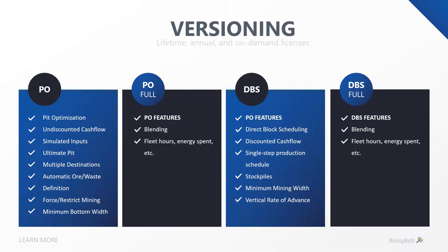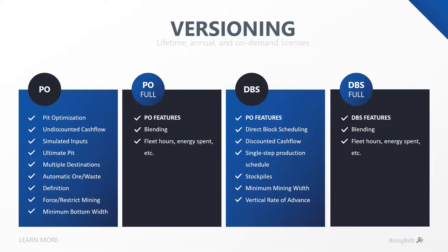SimSched DBS Core delivers an optimized mine schedule straight from the block model while respecting mining constraints. SimSched DBS Full adds blending and other constraints such as equipment hours, production by rock type, consumption of processing inputs, and metal production. SimSched Pit Optimizer is a simplified version that runs pit optimization respecting minimum bottom widths, while SimSched Pit Optimizer Full also allows blending and other constraints.